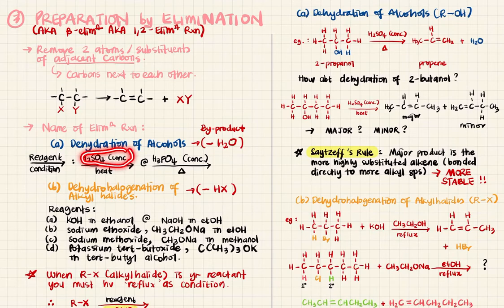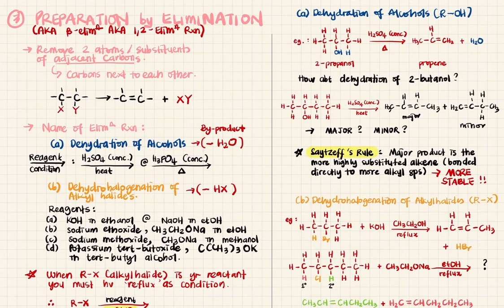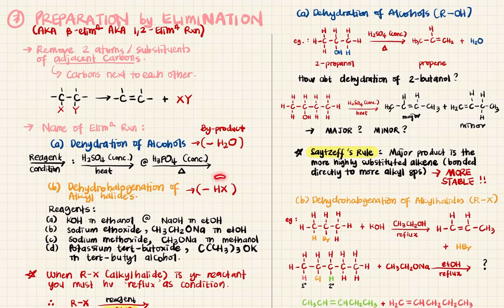For dehydration of alcohol, we use concentrated sulfuric acid while heated — write the reagent above the arrow and the condition below. We can also use concentrated phosphoric acid while heated. The second elimination reaction is dehydrohalogenation of alkyl halides, where you have an alkyl halide with a halogen, and you remove HX to get your alkene. Reagents you can use include potassium hydroxide in ethanol, sodium hydroxide in ethanol, or sodium ethoxide.